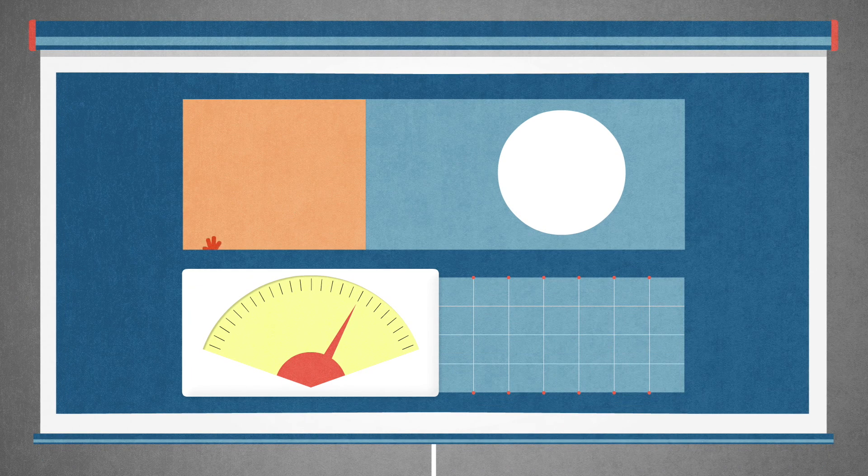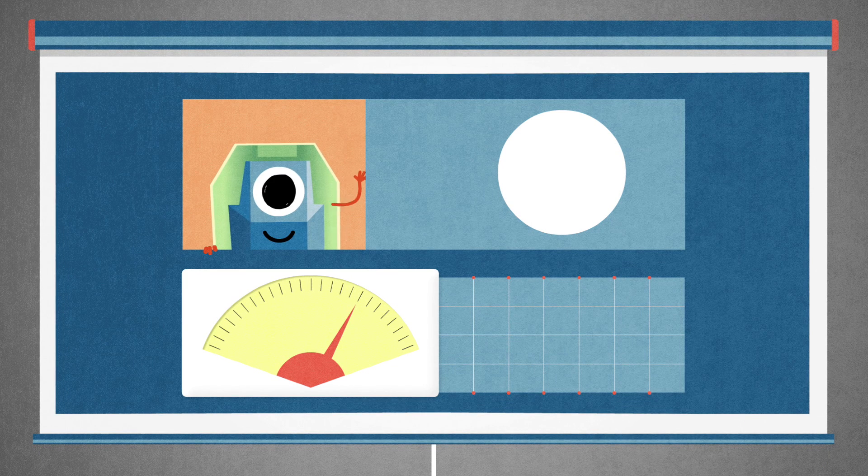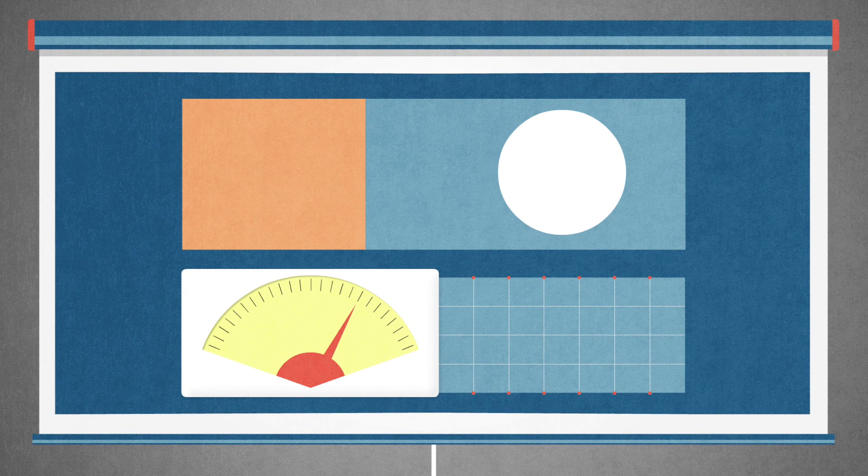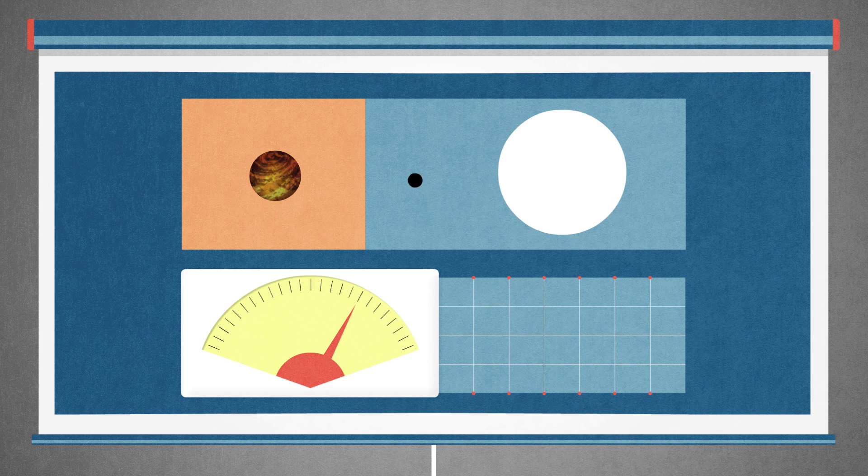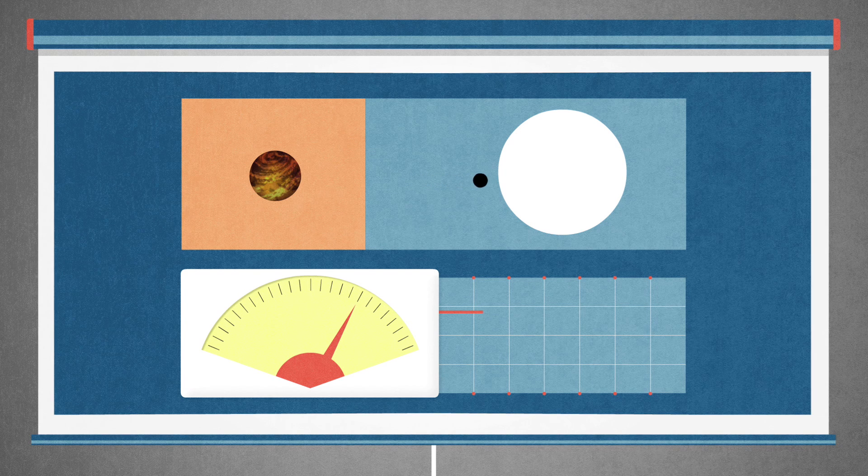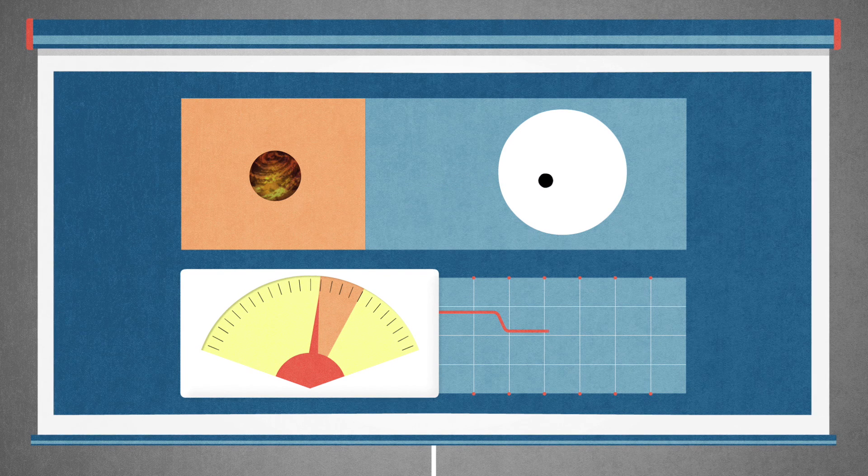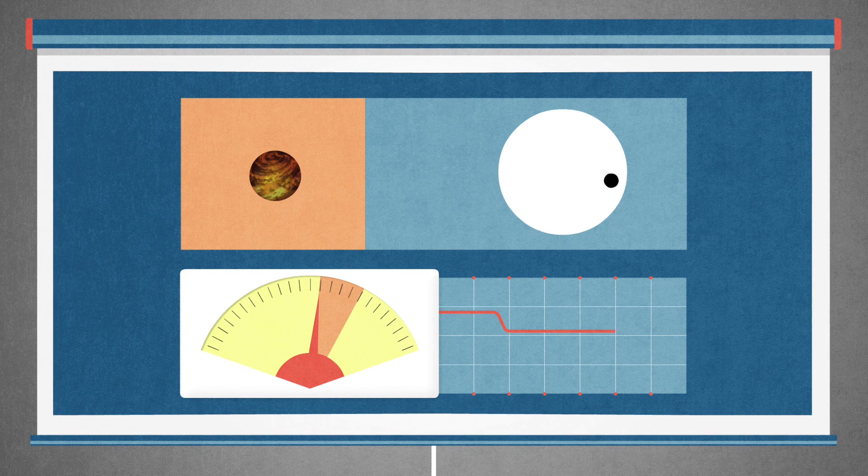To accurately measure the sizes of planets, CHEOPS will use a method called transit photometry. When a planet passes in front of its star, the so-called transit, it blocks a very small part of the stellar light.